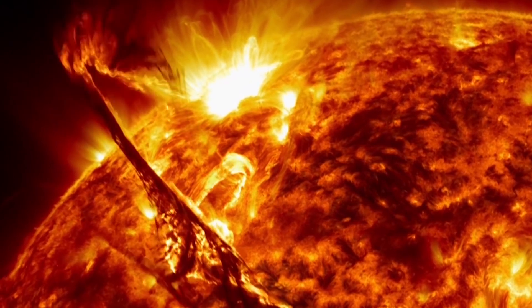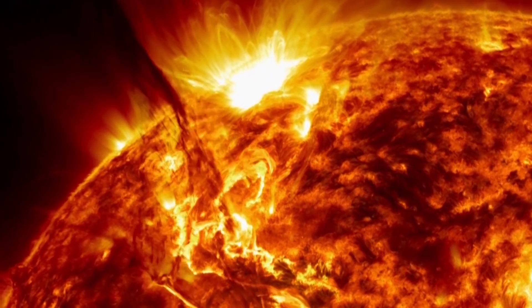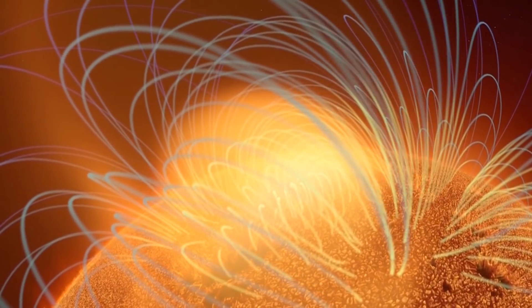The photosphere is marked by bright, bubbling granules of plasma and darker, cooler sunspots, which emerge when the Sun's magnetic field breaks through the surface.